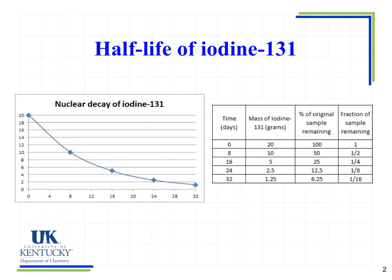Let's look at our graph. We start at some amount and over time the amount of iodine-131 is decreasing — the amount gets smaller and smaller. Looking at our table of data, at time zero — our starting point — we have 20 grams of iodine-131. At that point we have 100% of our original sample remaining, and for our fraction of the sample remaining we say we have one — we have the entire sample remaining.